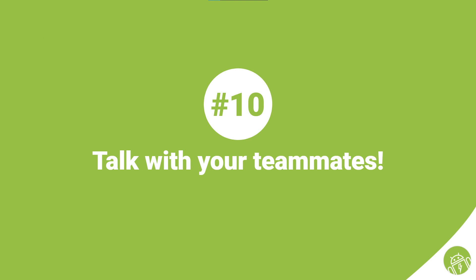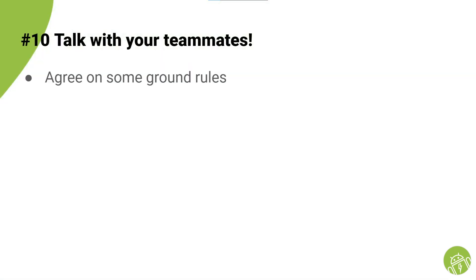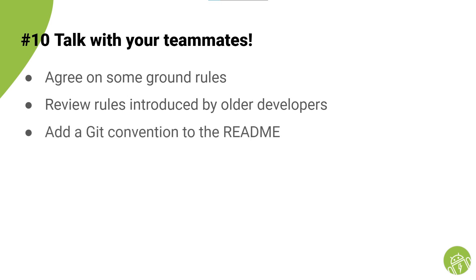Number ten: talk with your teammates. To have some ground rules that everyone agrees on and to be on the same page, set up a meeting and talk about what fits the most for your team and your project. Don't be afraid to review the rules already introduced by older developers. I also suggest adding a git convention to your repo's readme so everyone can refer to it and to make life easier for new team members.